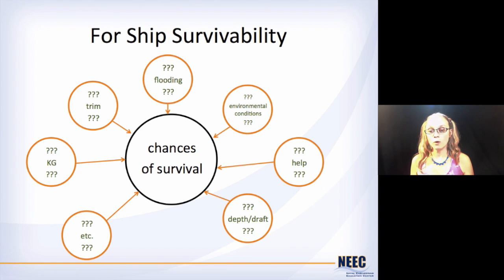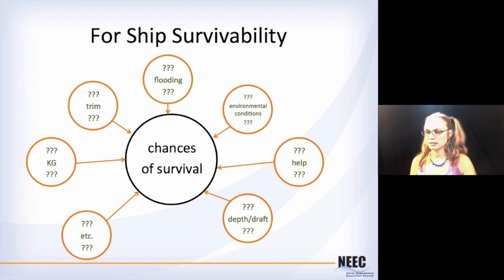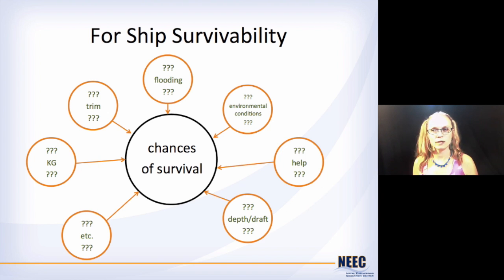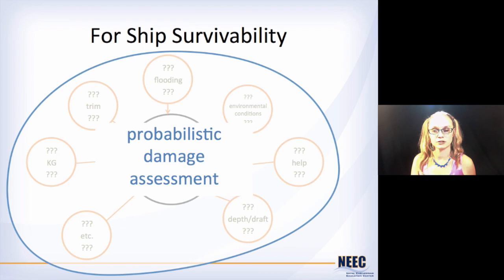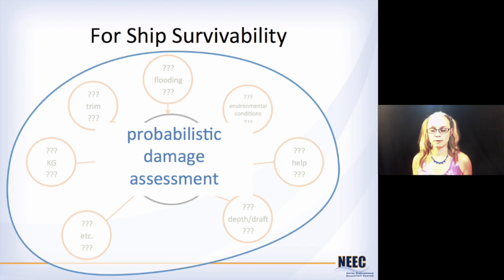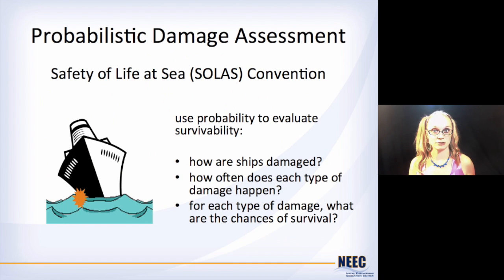For ship survivability, we can do some calculations on damage stability. We can figure out how the GZ curve changes when compartments get flooded, and how that affects the KG, trim, depth, and draft. We can figure all that out, except we don't know which scenario will be applicable at the time of the damage because we don't know where the damage is going to be — so all of that is still kind of uncertain. So we're going to take all of that together and use this probabilistic damage assessment to lump it all together so we can come up with one clear picture of how safe our ship is.